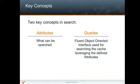Each cache search is built on two core concepts: attributes, things that can be searched on, and queries, a fluent object-oriented interface that is used for searching all aspects of the cache, leveraging the defined attributes.